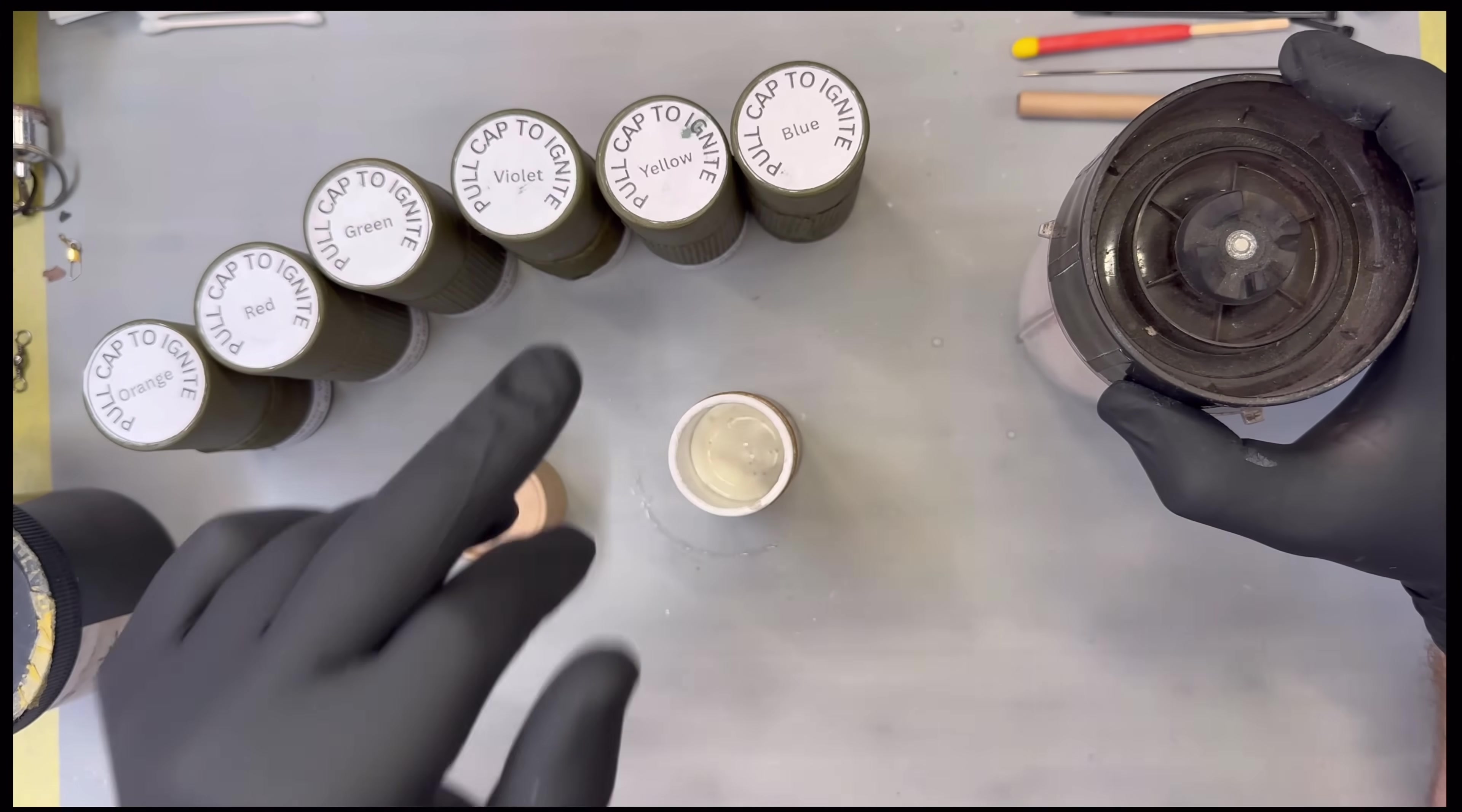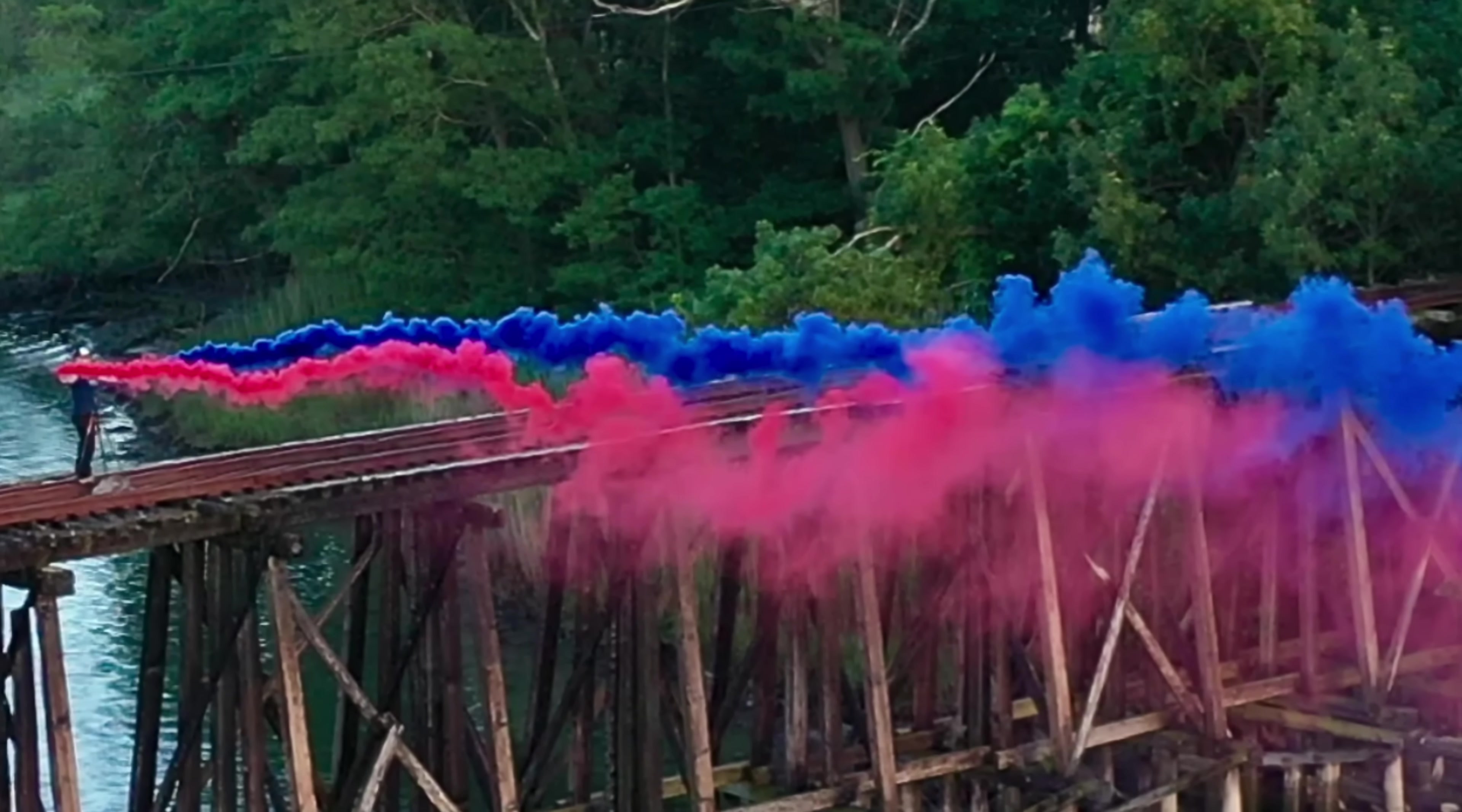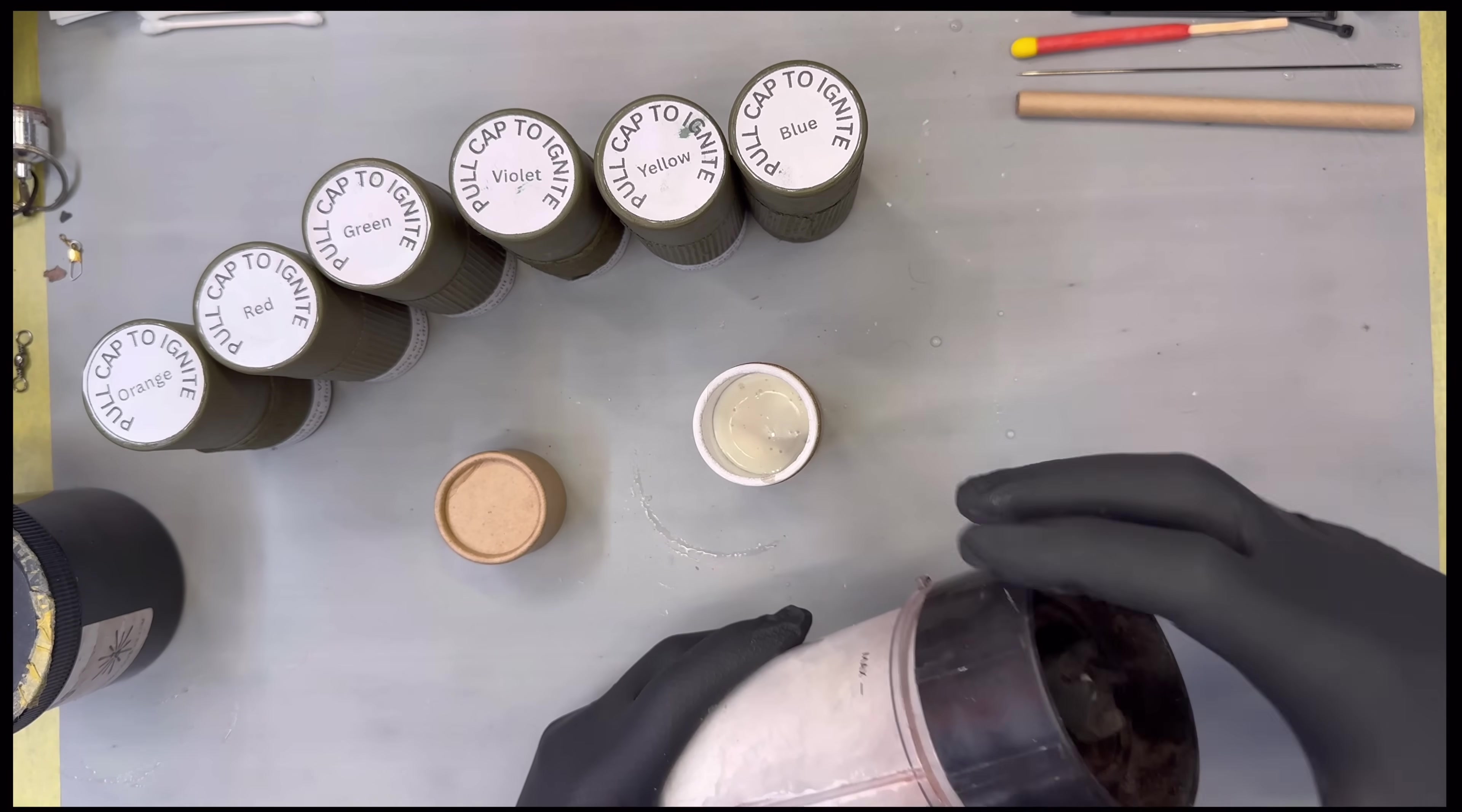Now I need to make white, and this is a formula that all I did was substitute terephthalic acid for the proportion of dye that would normally be in one of these. These are very flexible. Anyway, so we load this bad boy up.